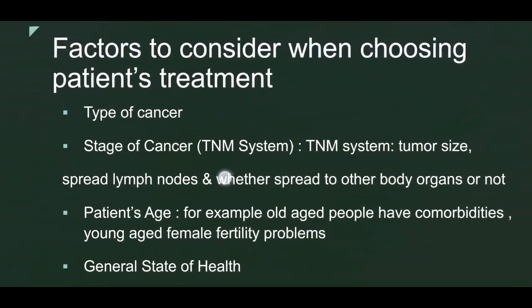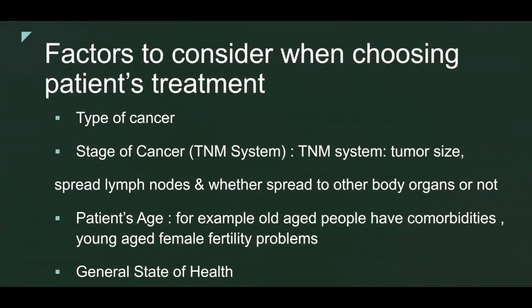The type of cancer matters because not every drug works for every malignancy, and even within a specific organ's cancer, specific drugs are required. For example, bronchogenic cancer — lung cancer — has two major types: small cell lung cancer and non-small cell lung cancer, which are totally different in biological behavior, aggressiveness, and type of treatment used.